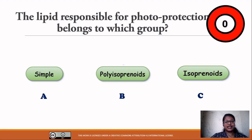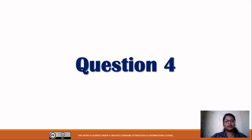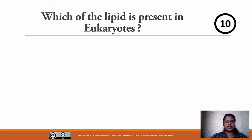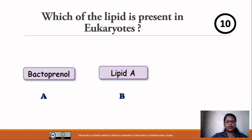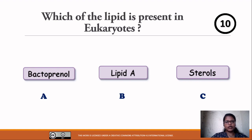Time is up. Question number four: Which of the lipids is present in eukaryotes? Your options — option A: bactoprenol, option B: lipid A, option C: sterols. Time starts now.